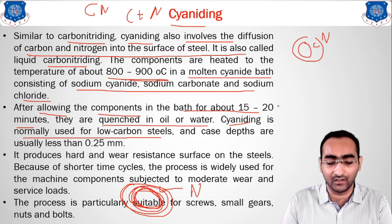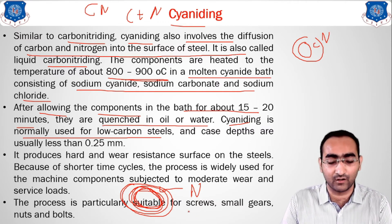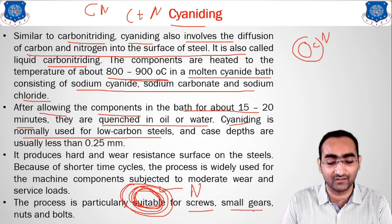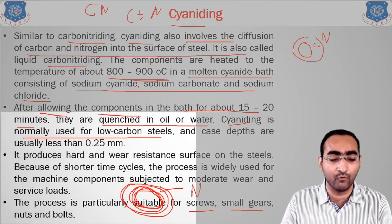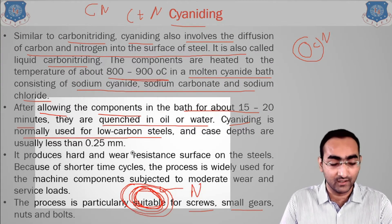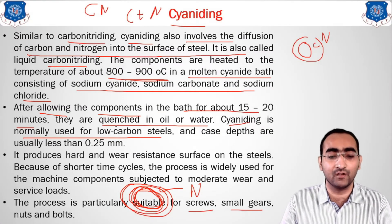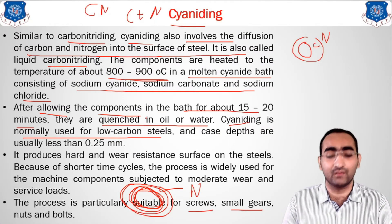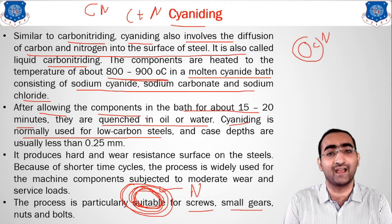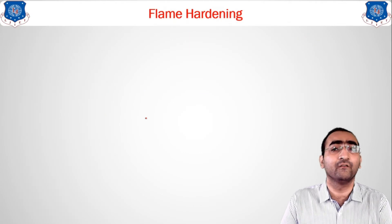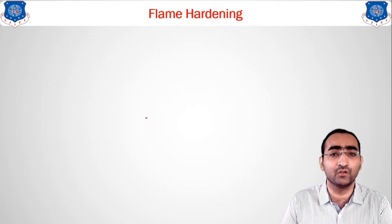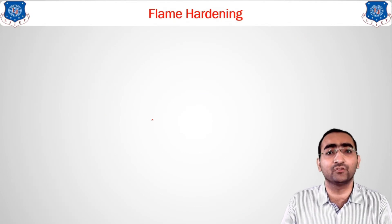Cyaniding uses diffusion of carbon and nitrogen on the surface. This method can be used for small components such as gears, screws, nuts, and bolts.